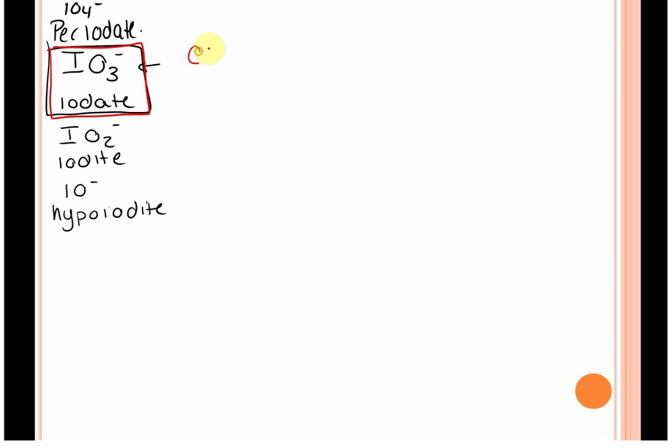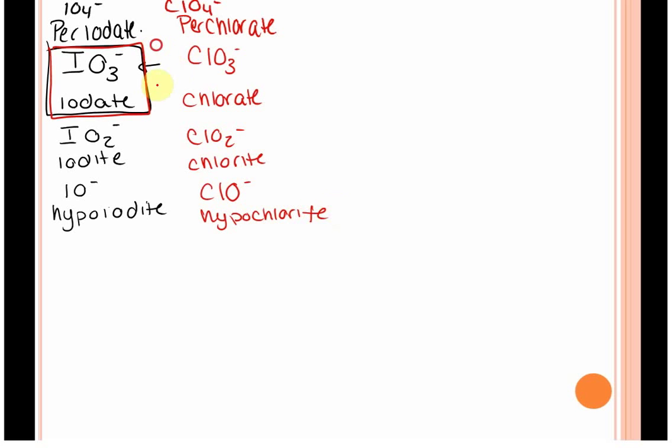Alright, so let's look at some more. ClO3 minus, this is iodate, this is chlorate. ClO4 minus is perchlorate. ClO2 minus, chlorite. And ClO negative is hypochlorite. Now, these are the two that demonstrate that whole series that is on the next slide.